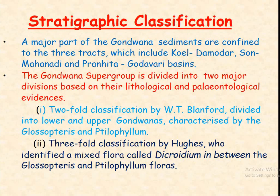Stratigraphic classification. A major part of Gondwana sediments are confined to three tracts, which include the Koel–Damodar, Son–Mahanadi, and Pranhita–Godavari Basins.